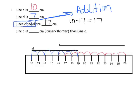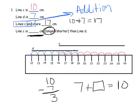And then it says line C is how many centimeters longer or shorter than line D? Well, line C is definitely longer than line D. So it's longer. And since line C is 10 centimeters and line D is 7 centimeters, one way to do it, 10 minus 7 is 3. Another way to do it is to say, well, line D is 7 centimeters plus what gives us 10 centimeters. So that would be another 3. So the answer is C is 3 centimeters longer than line D.